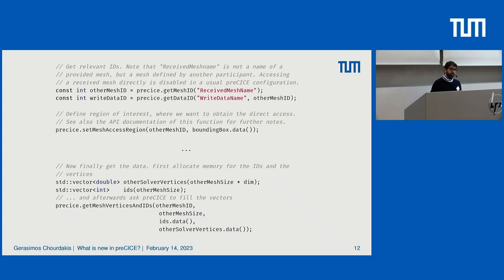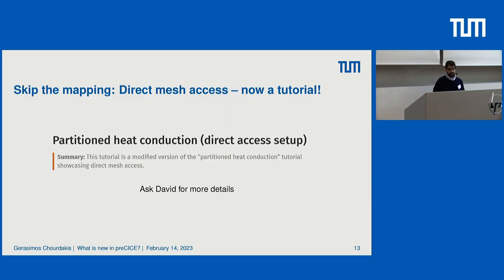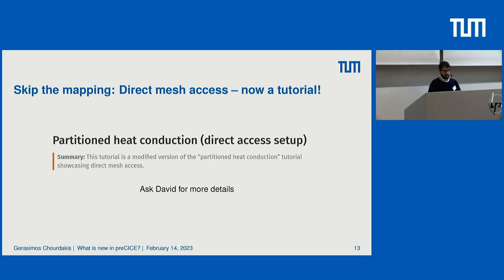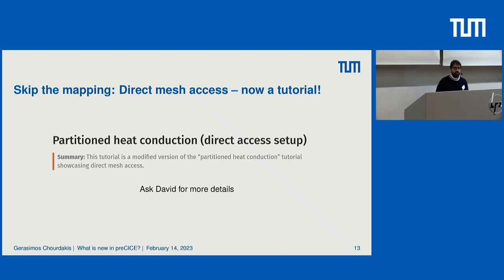This was available since Precise version 2.3 — that's last year's news. What is new now is that we have a tutorial demonstrating it. Please ask David for more details. This is the partition heat conduction: a heat conduction problem on a plate, cut in the middle. Since we have the same number of points, we can directly use the received mesh without doing a mapping.